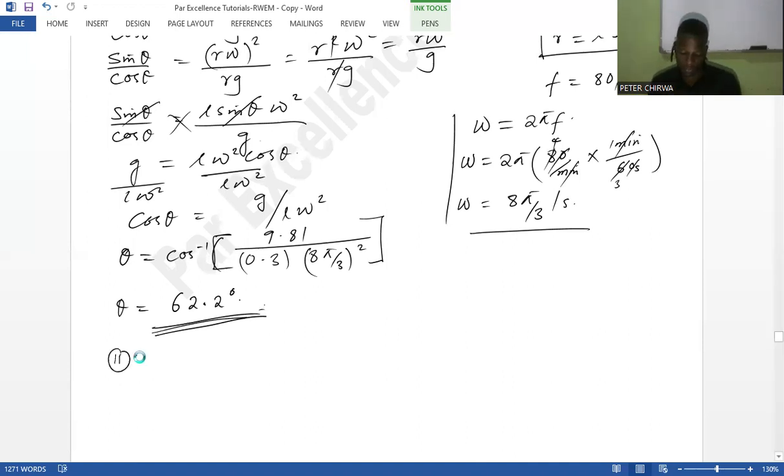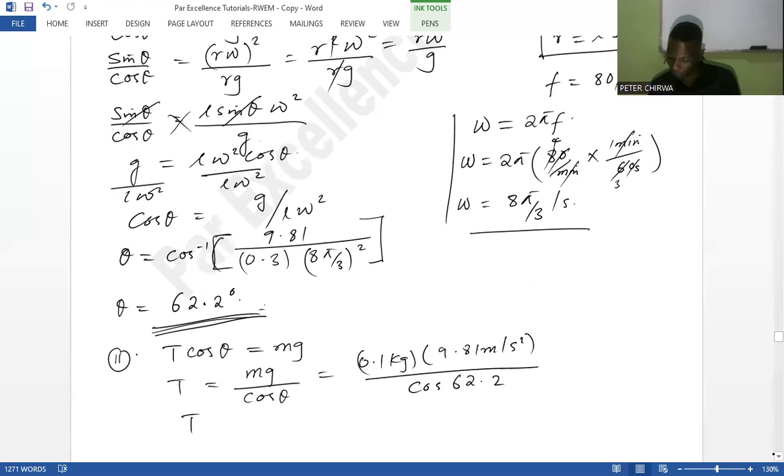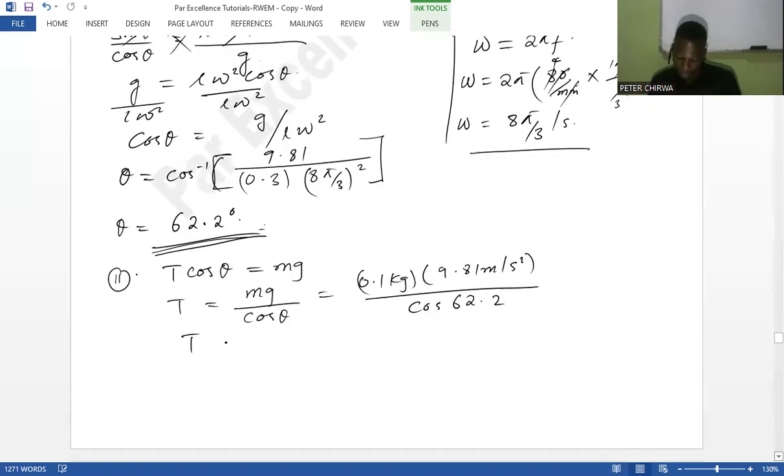So now the second question, we are being asked to find the tension in the string. So you can use any of the equations there. Let's use the Y component, where we have T cos theta being equal to mg. So tension is basically mg over cos theta. So we have the mass, the mass is 0.1 kilogram, it's 100 gram, so you convert it to kilogram. And divide by cos 62.2. So what would be our tension? Our tension here is going to be roughly 2.1 newton.